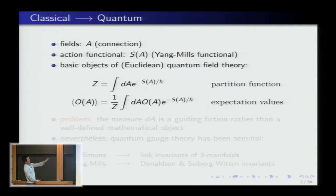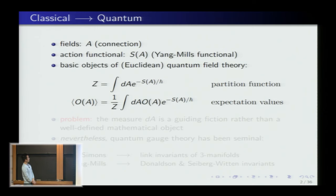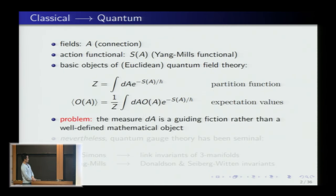The partition function yields the quantities of interest: expectation values of observables — the expectation of observable O against this putative measure. The problem is that the measure dA is usually a guiding fiction rather than a well-defined mathematical object.